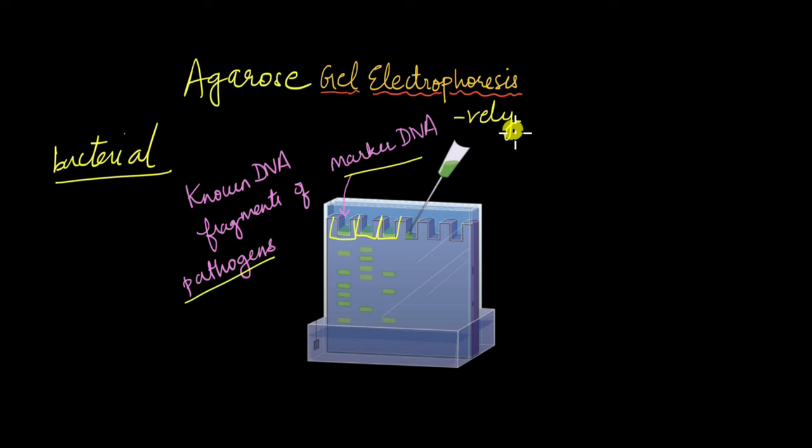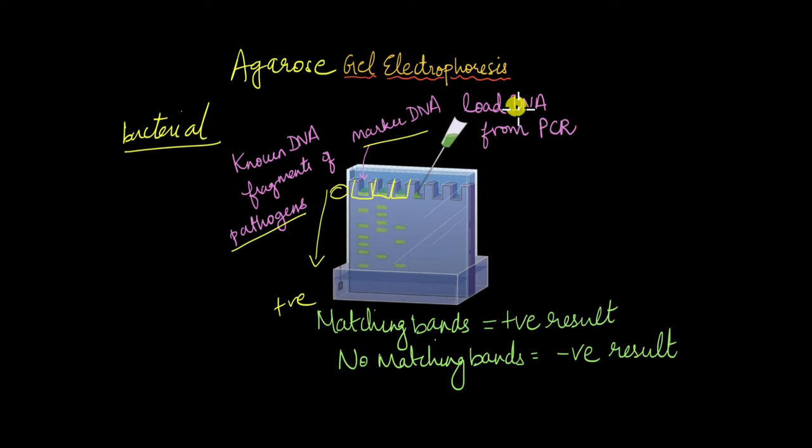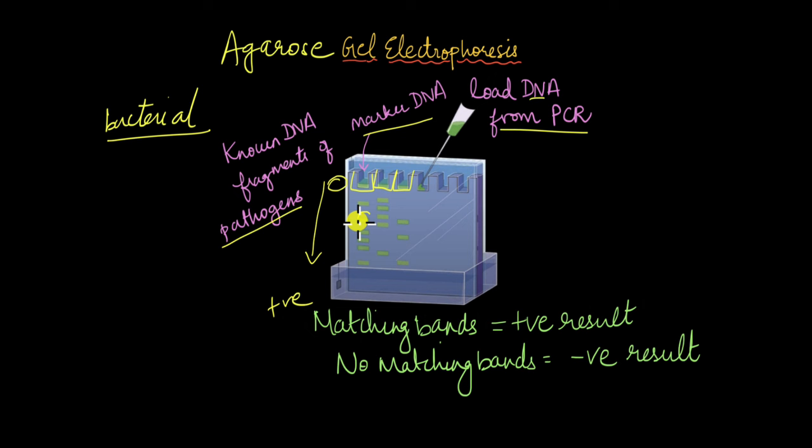Because DNA is negatively charged, it moves toward the positive end. Smaller DNA fragments move longer distances, while larger fragments stay closer. The marker DNA acts as a standard for comparison. Next, we load our PCR DNA sample and look for matching bands against the marker DNA. If a specific band indicates the bacterium we're looking for, and we get that band in our sample matching the marker DNA band, it suggests a positive result. If there's no matching band, that indicates a negative result.